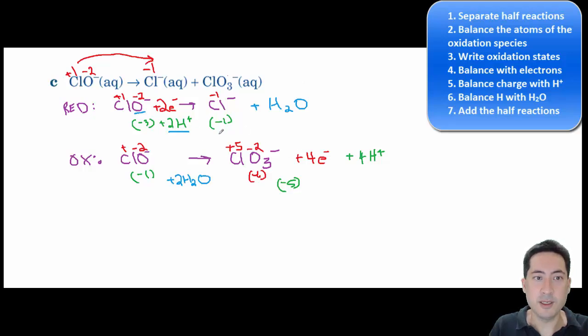So we get rid of the electrons here. And so we times everything here by two. That gets that to four, that gets that to four, two and two.